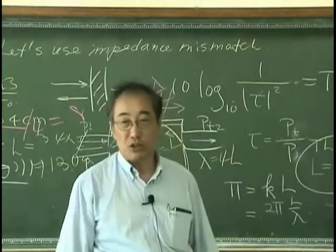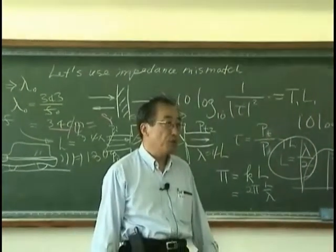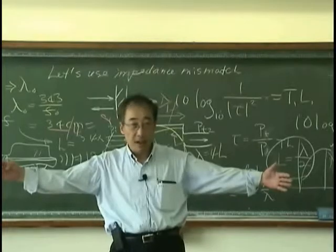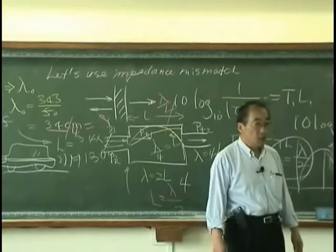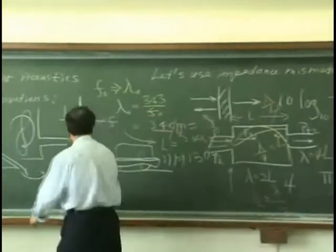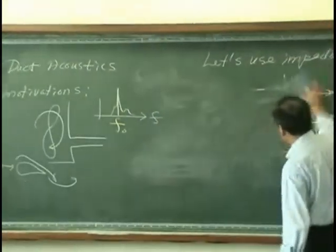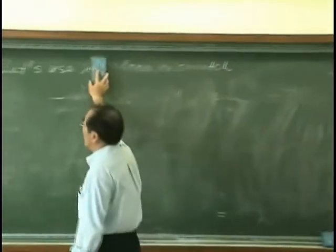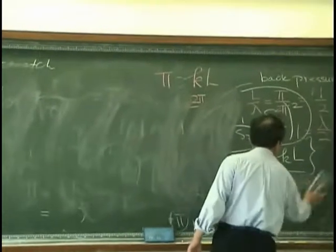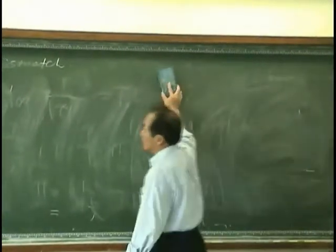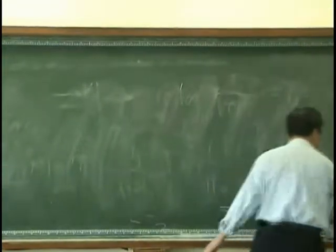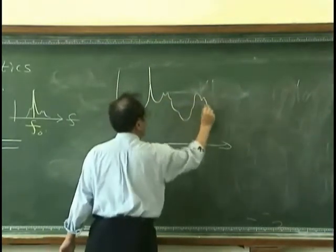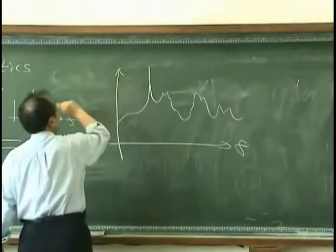But if you have to control 100 hertz noise, then the wavelength is 3.4 meters, and divided by 4 is 80 centimeters. So we need a big chamber. What we can do is, if we have a noise spectrum that looks like this...